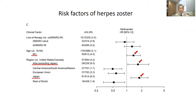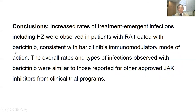45 opportunistic infections, including 22 multidermatomal herpes zoster, were reported. In conclusion, increased rates of treatment emergent infections, including herpes zoster, were observed in patients with RA treated with baricitinib. The overall rates and types of infections observed with baricitinib were similar to those reported for other approved JAK inhibitors. Thank you for listening.